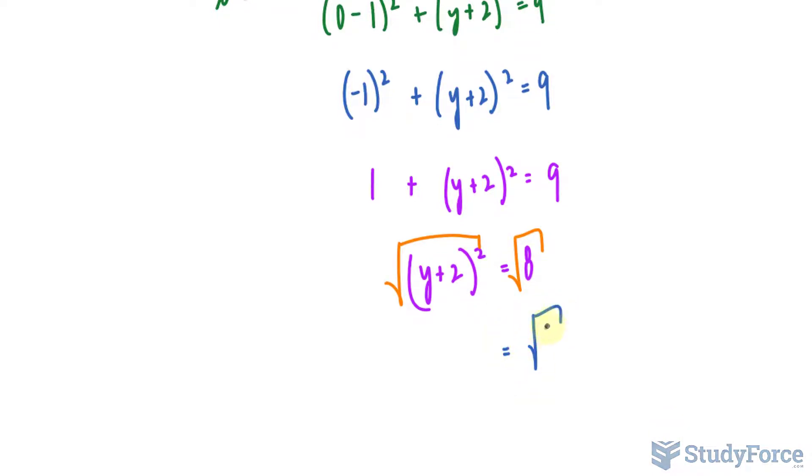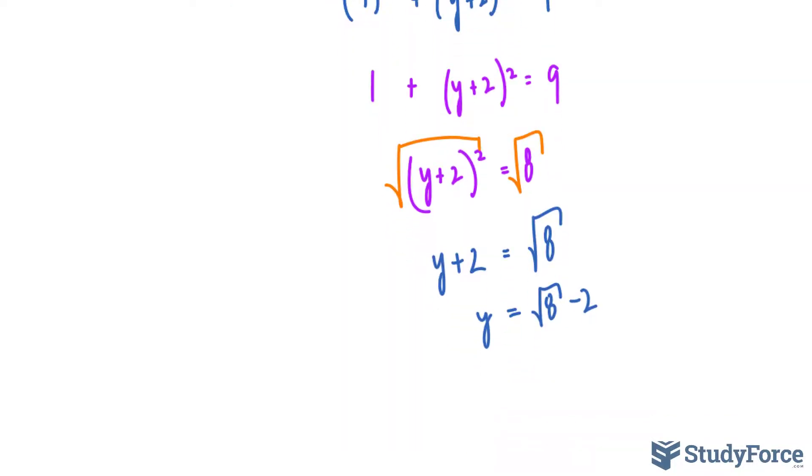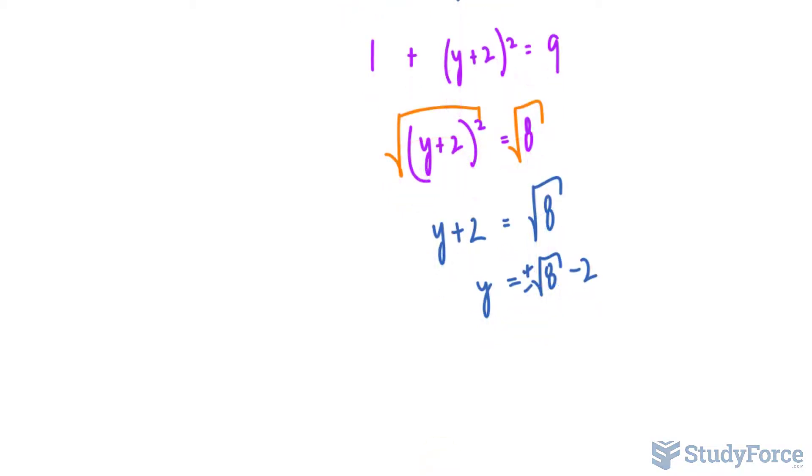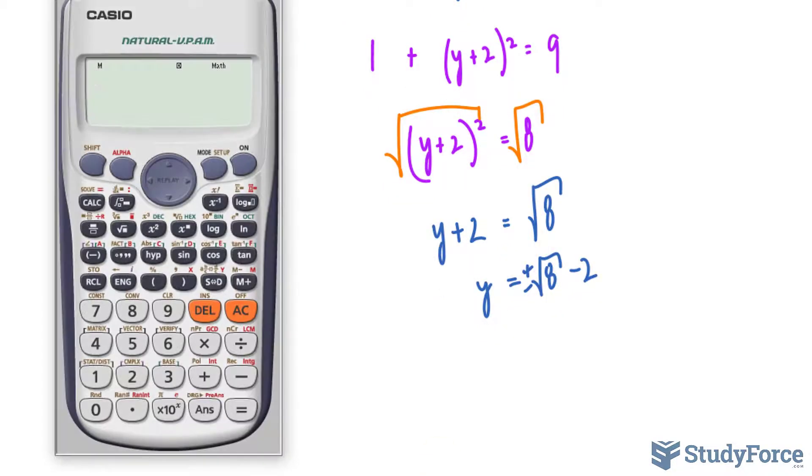So the square root of 8, we'll leave it like that. And on the left side, we have y plus 2. The square root of 8 minus 2 is the y coordinate of the y intercept. And this will be plus minus the square root of 8. Let's compute this number. Using our calculator, the square root of 8 minus 2.